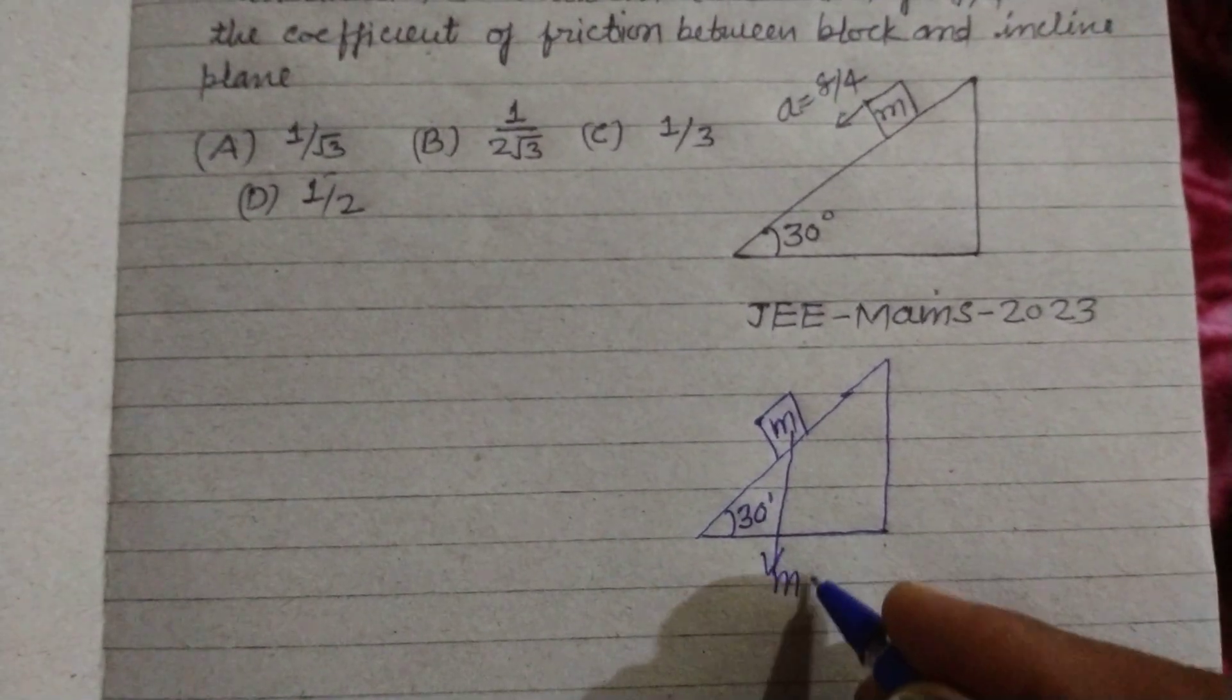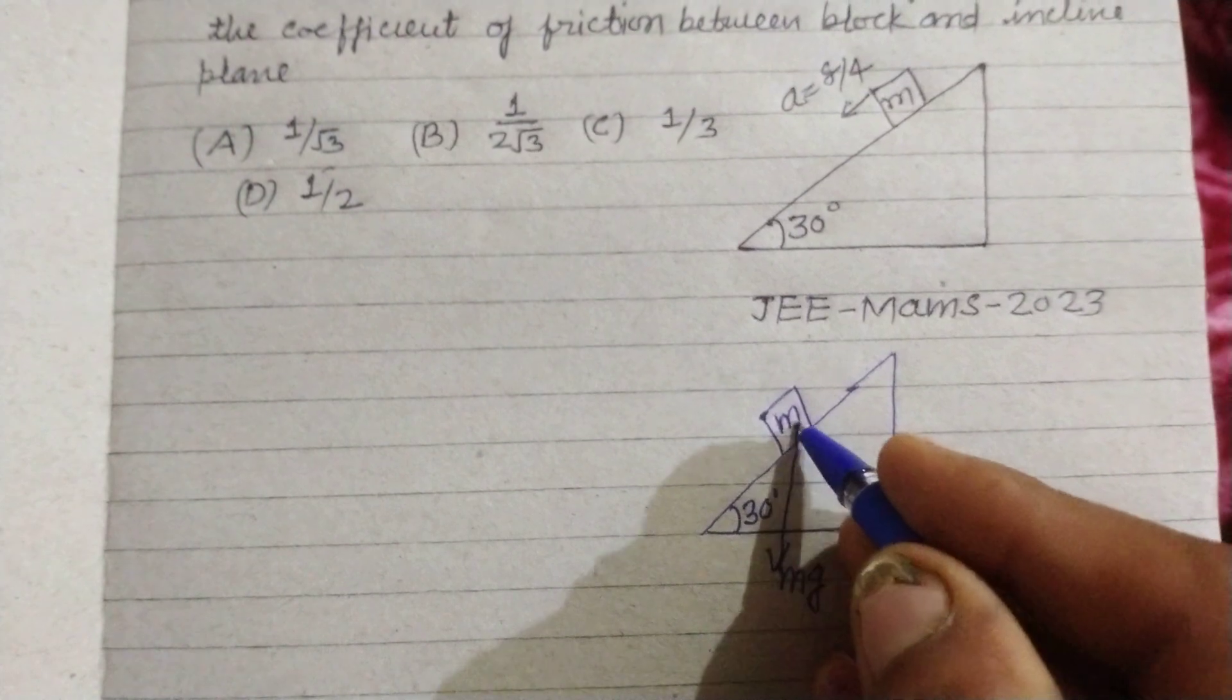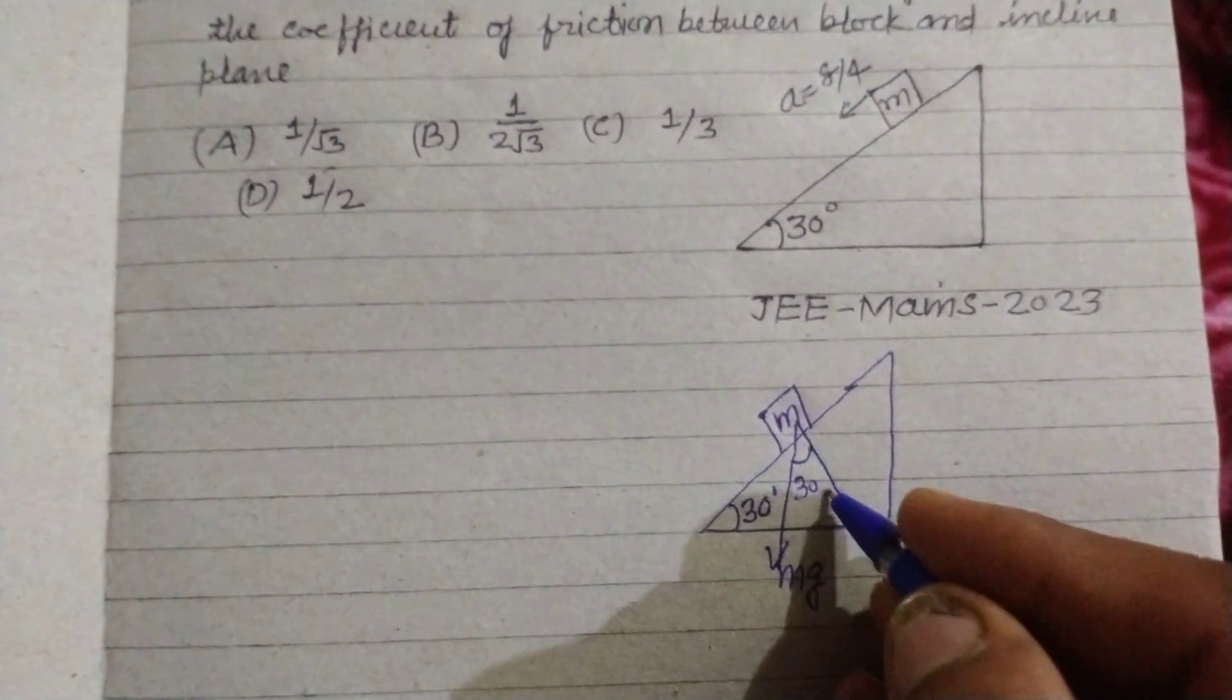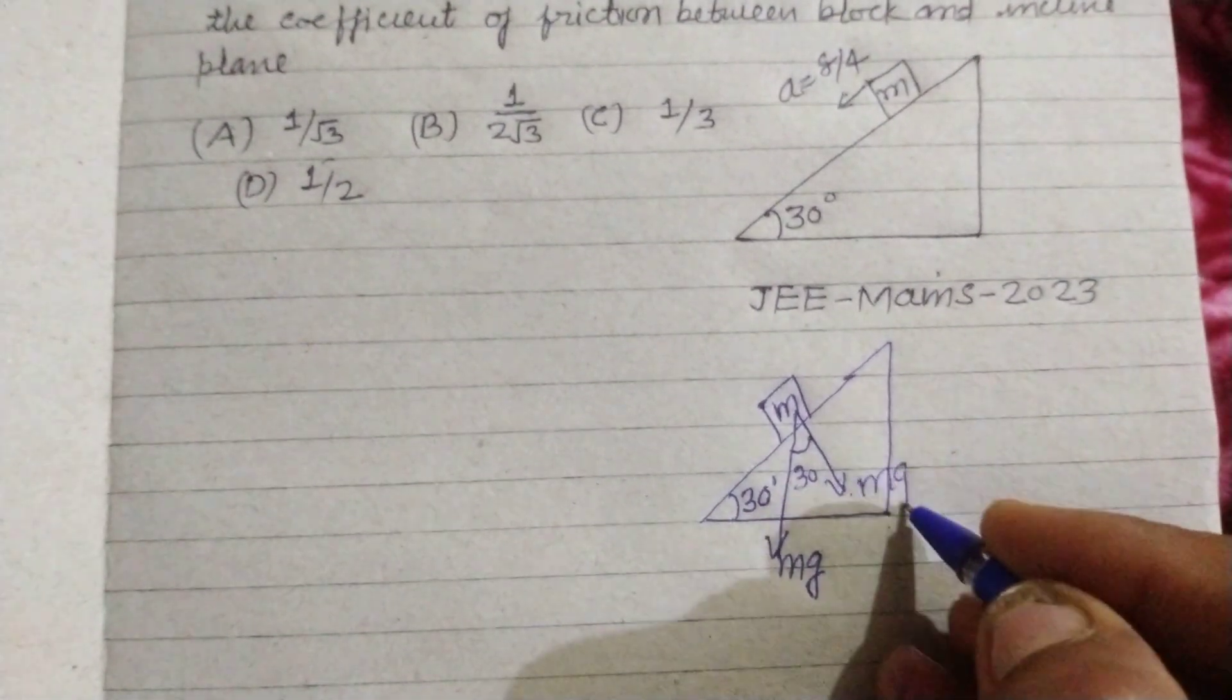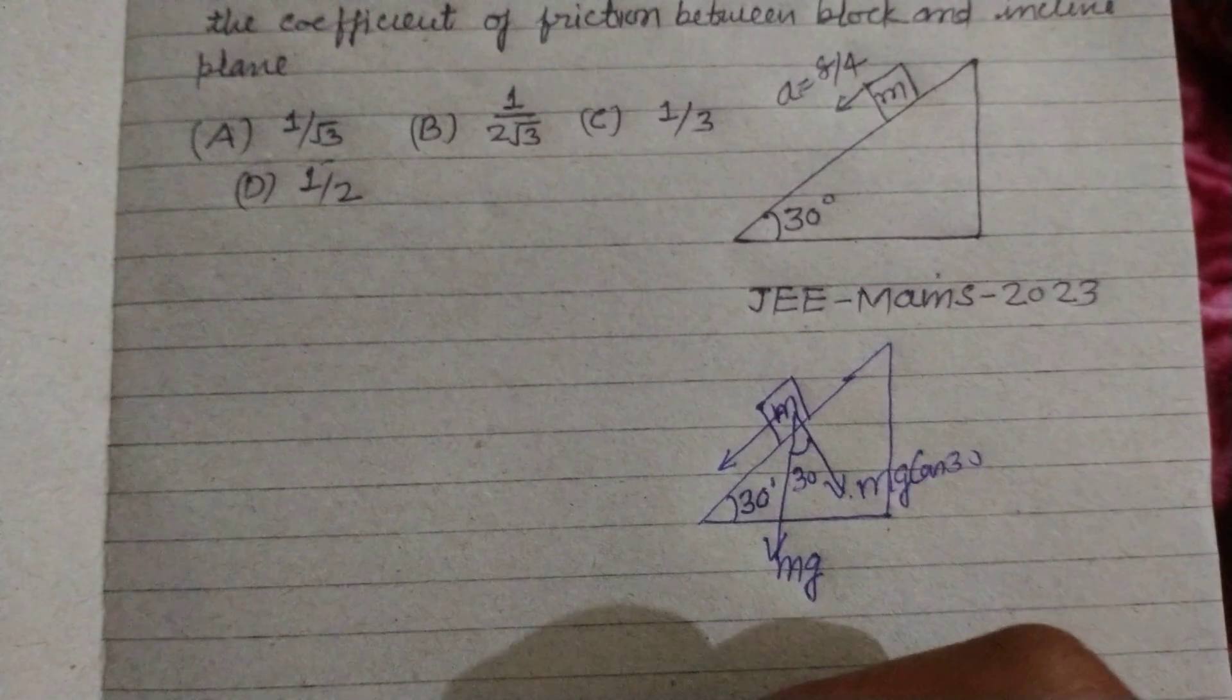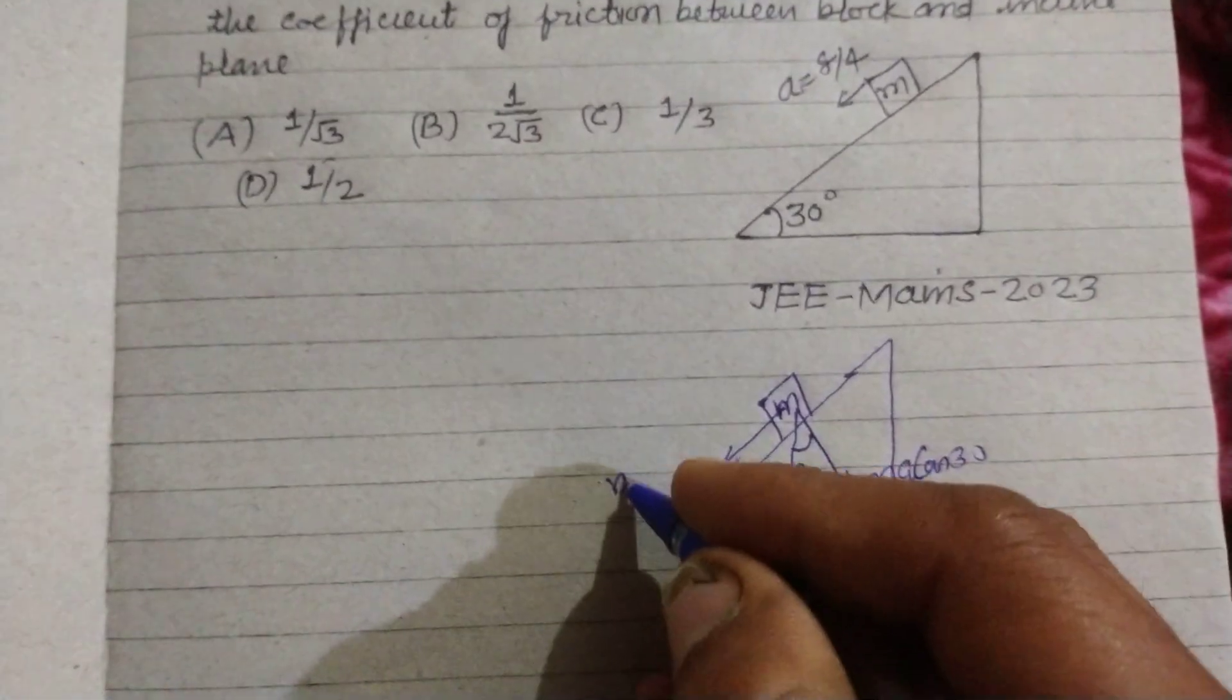Now its weight is working in downward direction and it is at angle 30°. So this part is mg cos 30° and towards the plane it is mg sin 30°.